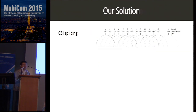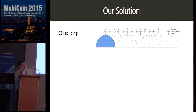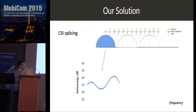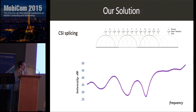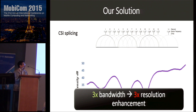Our idea is to transmit over each channel and measure the CSI sequentially. For example, we transmit on the first channel and get its CSI, then the second, and so on. After collecting all CSIs, we combine them in the frequency domain and derive a power delay profile from this wideband CSI. Since we increase the bandwidth three times compared to a single Wi-Fi channel, we observe a three-times resolution enhancement of the power delay profile.